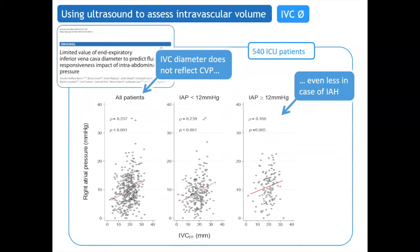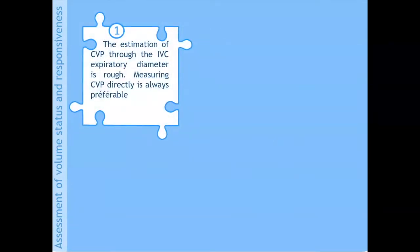In that French study with a quite large number of patients, there was no correlation between the IVC end-diastolic diameter and the right atrial pressure. Especially in patients with intra-abdominal hypertension — with intra-abdominal pressure higher than 12 mmHg — there was no correlation at all. The estimation of CVP through the IVC expiratory diameter is rough; measuring CVP directly is always preferable.